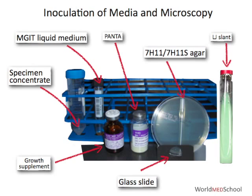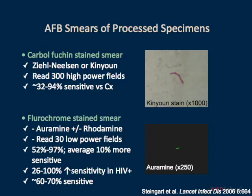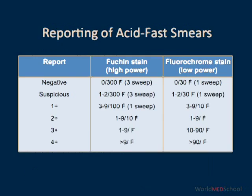The next step in mycobacteriology is smear microscopy. There are two types of stains available for microscopy: carbolfuchsin and fluorochrome stains. The carbolfuchsin stains are less sensitive because the technologist has to read 300 high-power fields, which typically takes about 10 minutes. The fluorochrome stain smears have to be read at 30 low-power fields, which typically takes a few minutes.